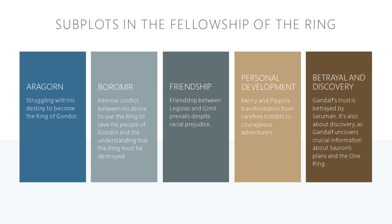We also have the subplot involving Gandalf's investigation into the true nature of Bilbo's ring. This subplot is woven throughout the first half of the story, building suspense and tension as Gandalf uncovers the terrifying truth, setting the stage for the main plot to unfold. It begins at Bilbo's birthday party, where Gandalf first becomes suspicious of the ring's power. From there, Gandalf embarks on a journey of his own, seeks counsel from Saruman, only to be betrayed and imprisoned, revealing Saruman's alliance with the Dark Lord Sauron. During Gandalf's investigation, we also learn about the history of the ring and its corrupting influence, which serves to heighten the stakes of Frodo's quest.